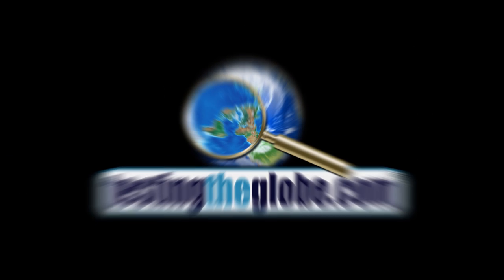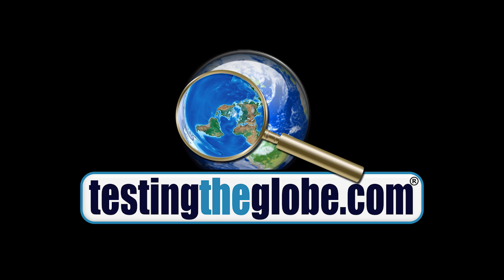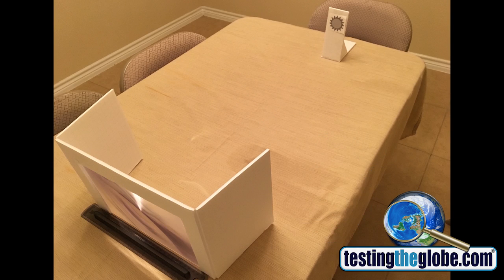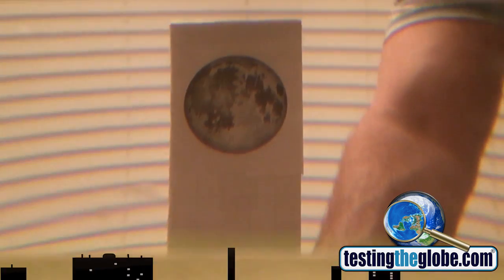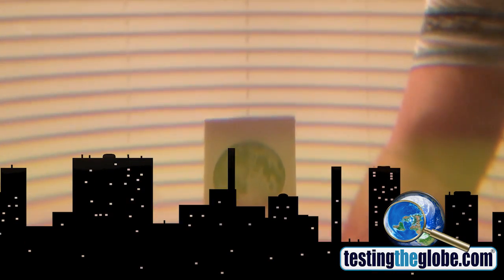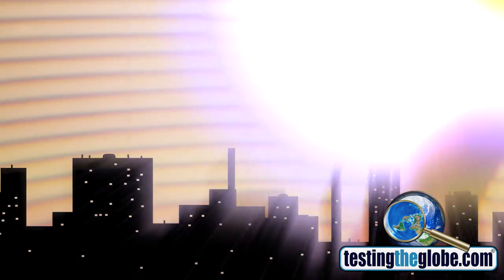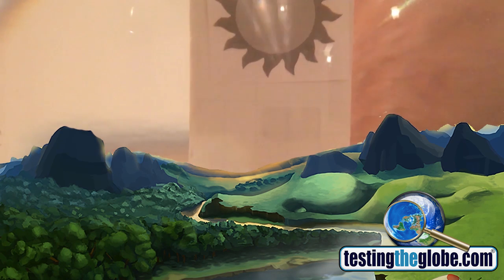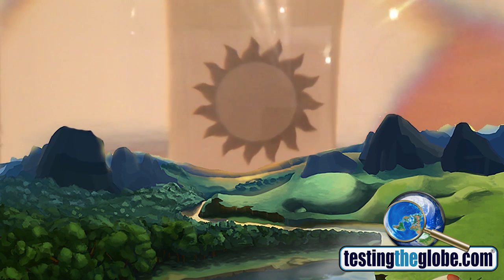Hey guys, Rob Skiba here with another testingtheglobe.com short video. If you've been following some of my other videos, I've been showing how I believe the sun and moon work over the flat earth model, taking advantage of the fact that the atmosphere is full of moisture and is acting like a lens.